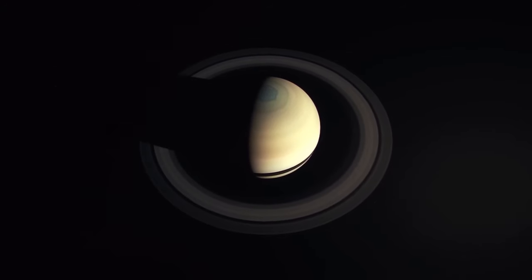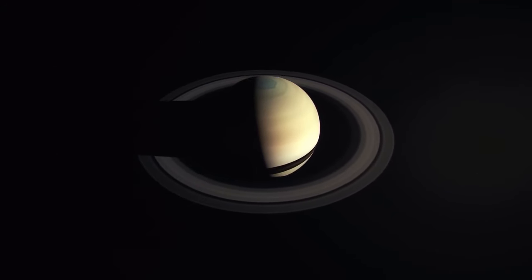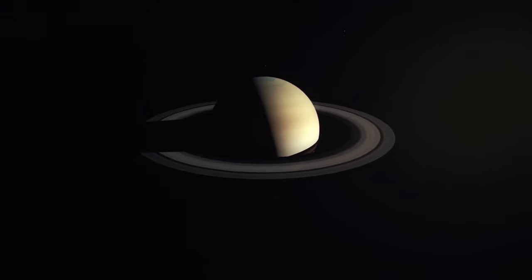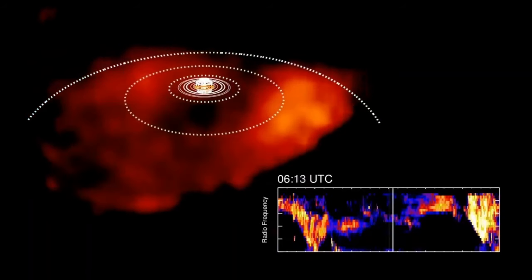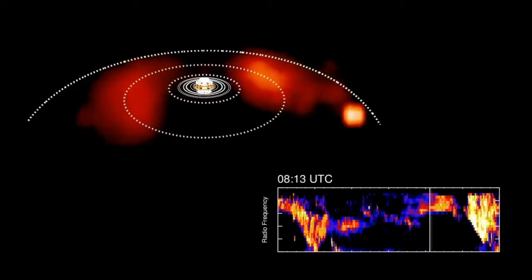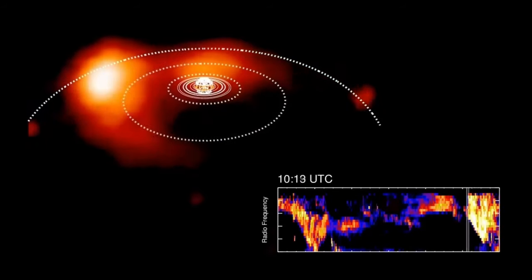A remarkable 62 new satellites have been discovered orbiting this ringed giant, bringing the grand total to an impressive 145 moons. But what truly piques the interest of scientists are two of Saturn's moons: Titan and Enceladus.